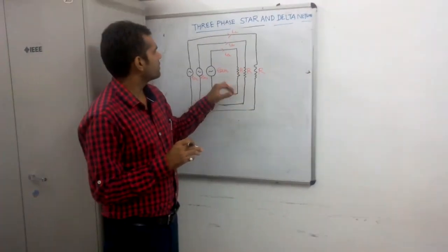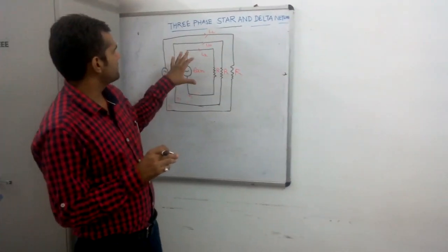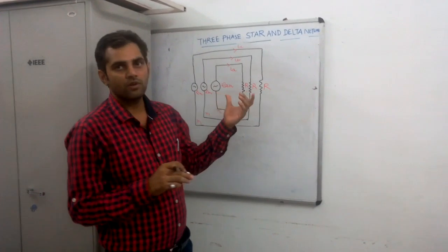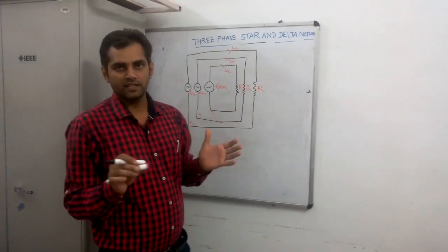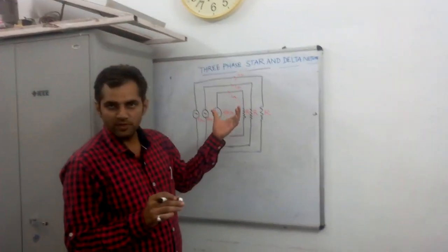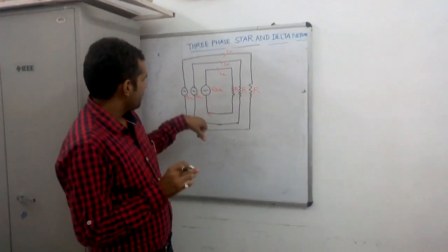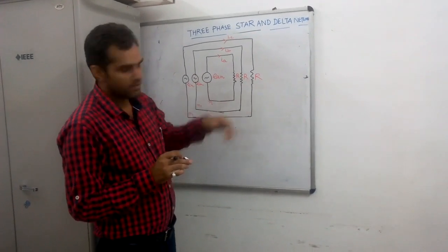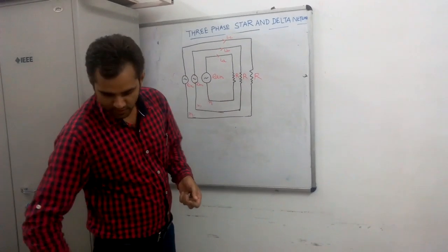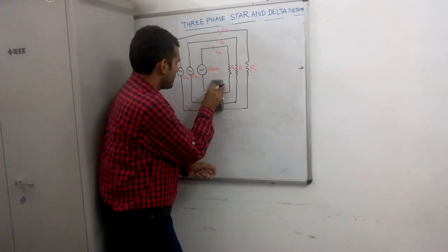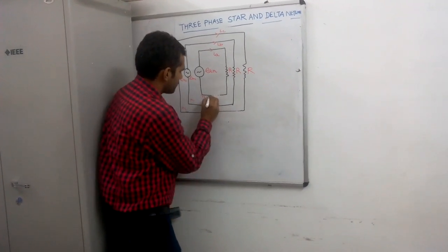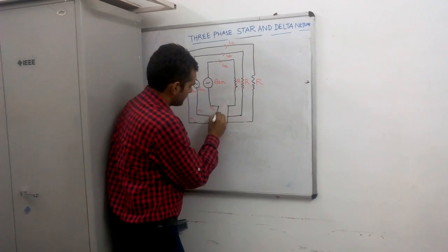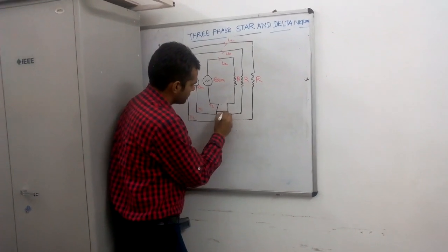The 3-phase system basically has 3 single-phase sources with load resistance R. Each source is not electrically connected to each other. To make a 3-phase system, we can see that the returning path of each conductor is the same, so we can remove it and connect them together. It will look like this, and this will be the neutral point.